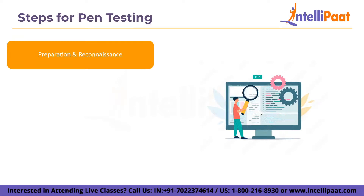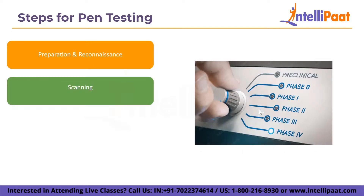Now let's discuss the steps for pen testing. The first step is preparation and reconnaissance: defining test scope and goals, including systems to be addressed and methodologies employed, and gathering intelligence such as network and domain names and mail servers. The next step is scanning, used to determine how a target application will react to various intrusion attempts. This involves two processes: static analysis — inspecting an application's code to estimate how it will behave while operating — and dynamic analysis — inspecting an application's code while it is executing, providing a real-time view of performance.